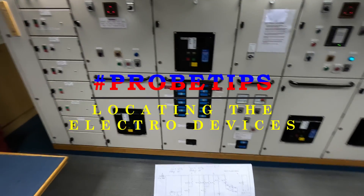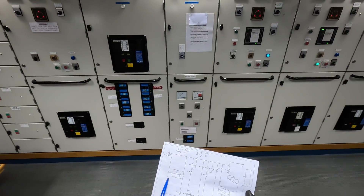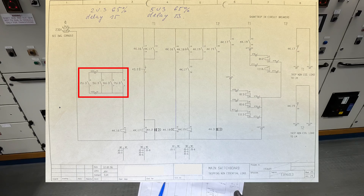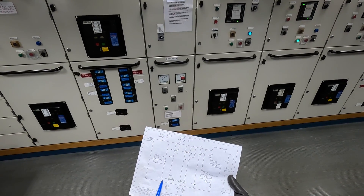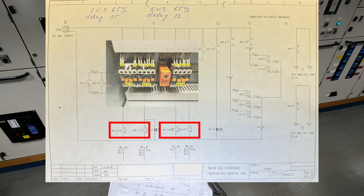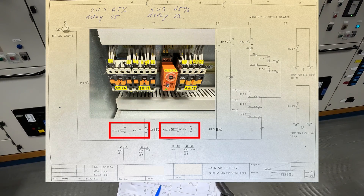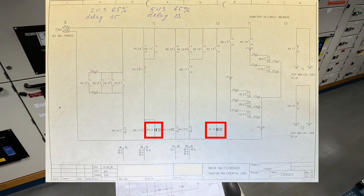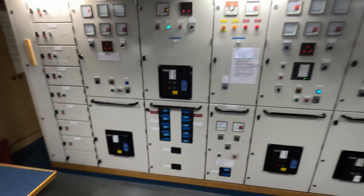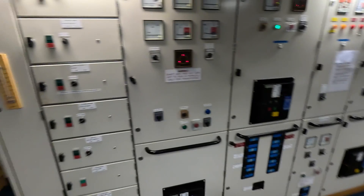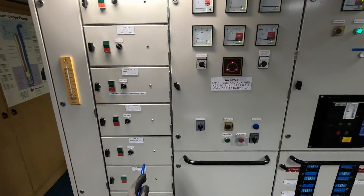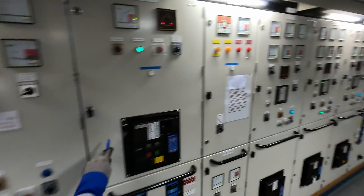How to find where a device is located. For example, 2U3, 5U3, 6U3, and 7U3 — all of these relays — 4K16, 17, 18, 19, and indicator lamps 4H2 and 4H3. First, we have the switchboard with plenty of vertical sections. For these vertical sections, we read from left to right, starting from 1, 2, 3, 4, 5, 6, 7, and so on.